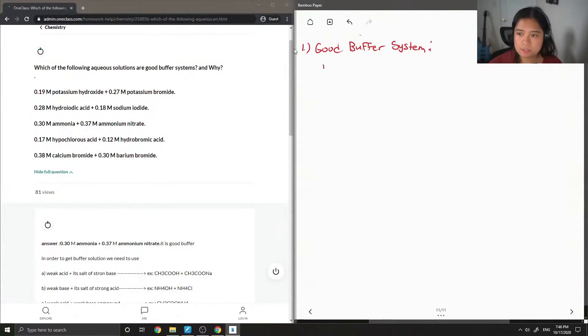So good buffer systems can be any of the following. So you can have a weak acid plus the salt of a strong base. Or you could have a weak base, plus the salt of a strong acid. And then lastly, you can have a weak acid, plus a weak base compound.